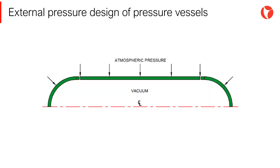The mechanism of external pressure failure is different from internal pressure failure. Therefore, different methods are required to design vessels to handle safely this different failure mechanism. Internal pressure failure can be understood as a vessel failing after stresses in part or a large portion exceed the material strength.